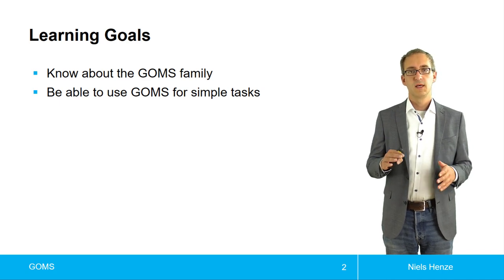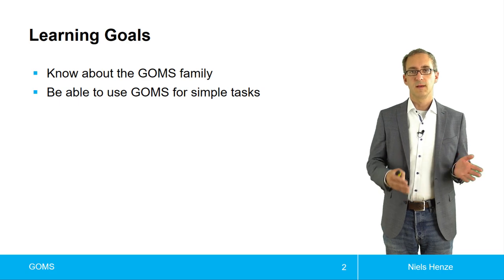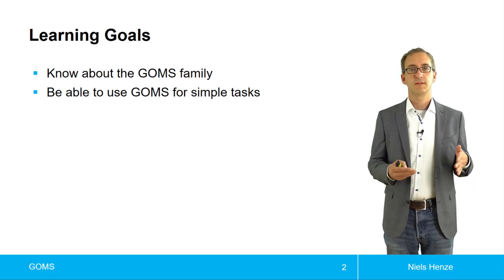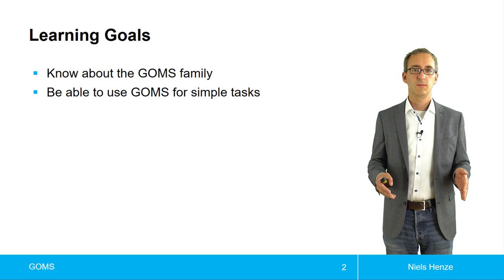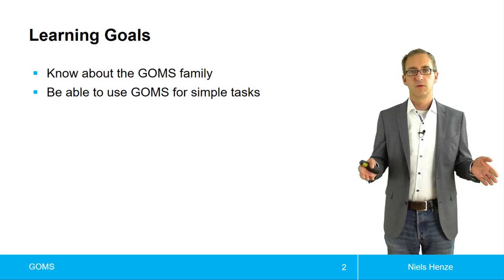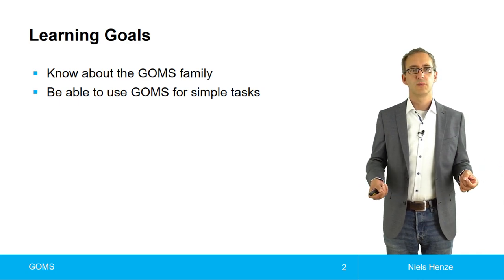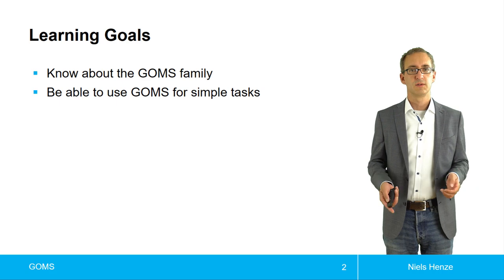And GOMS, the GOMS family, is a collection of models which lie at the boundary. Some models, such as KLM, are still able to predict task completion times, others cannot. We will now look at briefly the whole GOMS family. And then I will try to show you that even though they don't predict task completion times, they can still be useful.